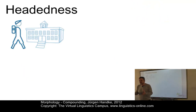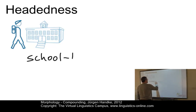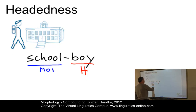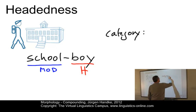Let's start with a classification. Like other constituents, compounds can be defined as consisting of a head and a non-head or modifier. For example, in the compound schoolboy, the head is boy, whereas the modifier is school. The head determines a number of properties — for example, it determines the category or word class. So schoolboy is clearly a noun because boy is a noun.